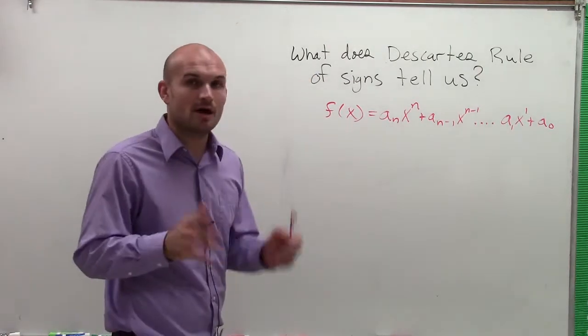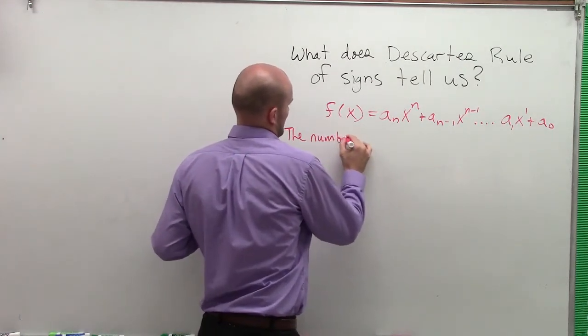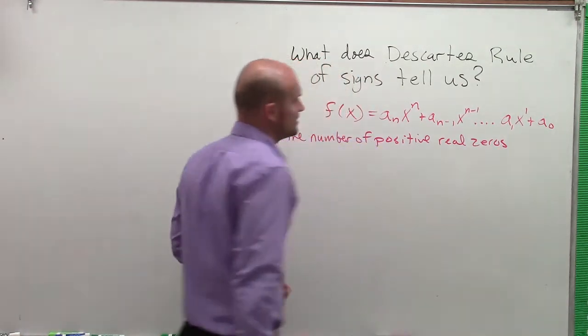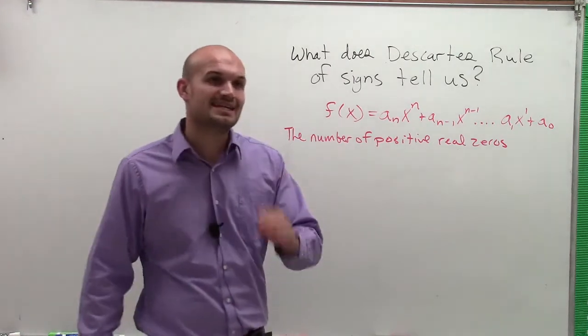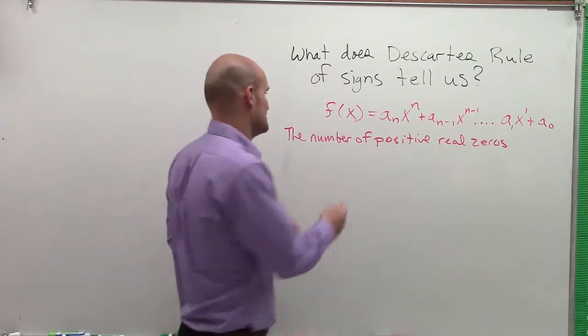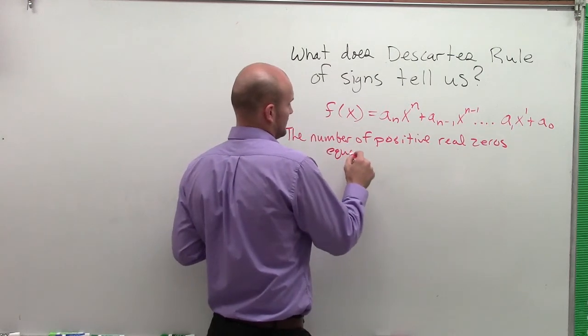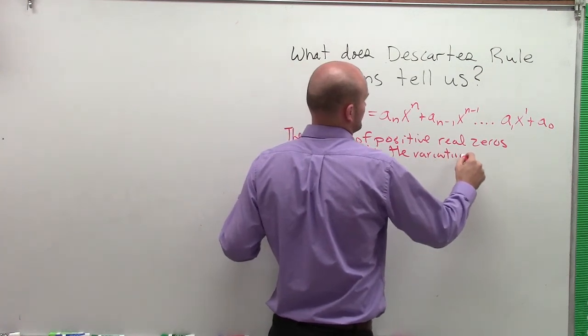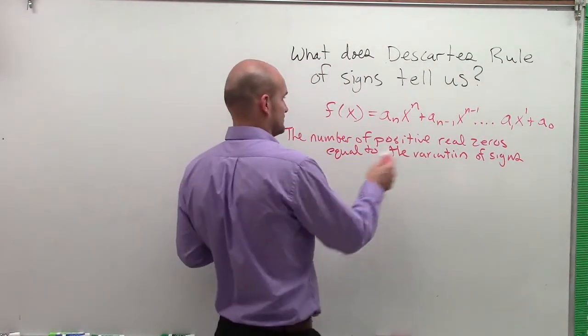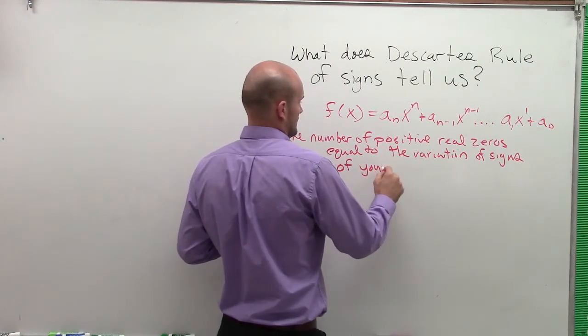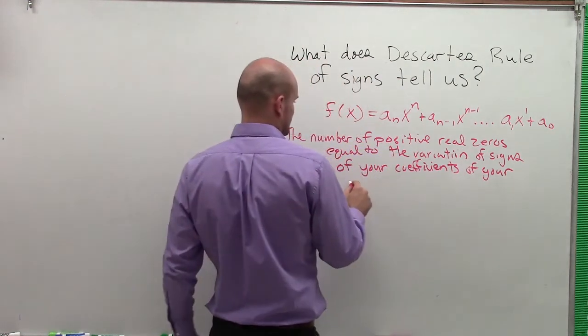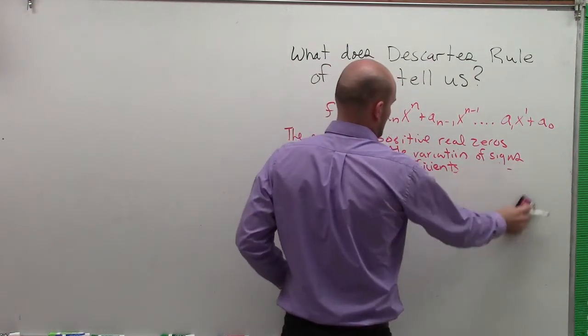Then what we have is the number of positive real zeros is equal to the variations of signs in your polynomial, or less than an even integer of those. So the number of positive real zeros is equal to the variations of signs, so it's the variation of signs of your coefficients of your terms.